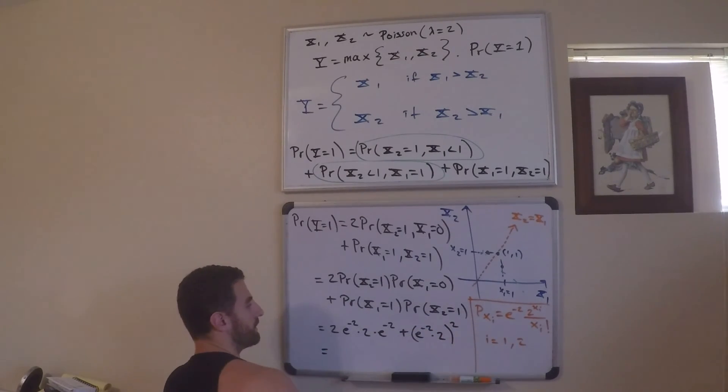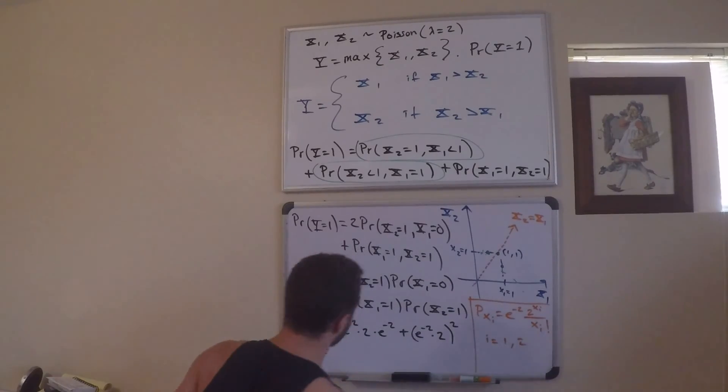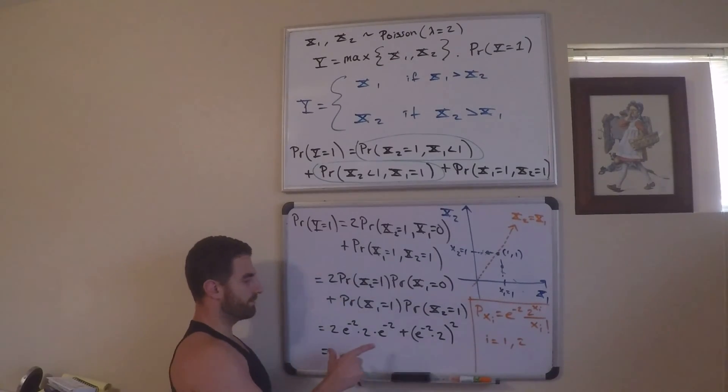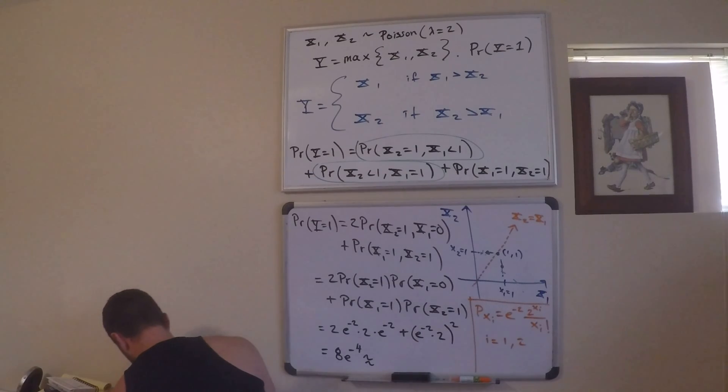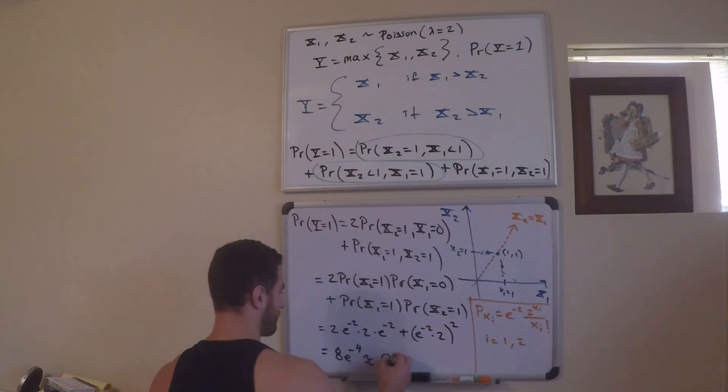So, what does this equal? Well, if I just clean this up a little bit, as you can see, I mean, these are basically the same thing. This is actually the exact same thing. So, this is going to be, just to simplify this, this looks like 8e to the negative 4, which is approximately what? This is approximately 0.1465.